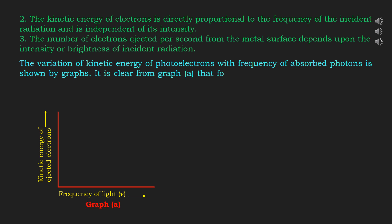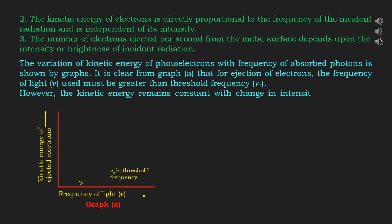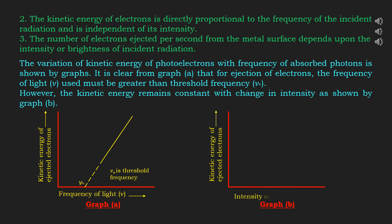It is clear from graph A that for ejection of electrons the frequency of light used must be greater than threshold frequency ν₀, and the excess frequency is used to increase the kinetic energy of the ejected electron. However, the kinetic energy remains constant with a change in intensity, as shown by graph B. This means that if we increase the intensity of light, there will be no change in the kinetic energy of ejected electrons.